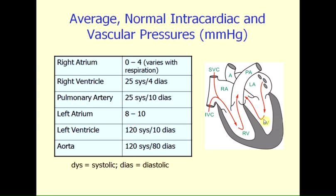The left ventricular pressure is rather high. It has a systolic pressure normally of around 120 millimeters of mercury when it contracts. In a person with hypertension or high blood pressure, it might be 140, 160, or 180 millimeters of mercury. But typically it's around 120 millimeters of mercury, and its diastolic pressure will be roughly the same as the pressure within the left atrium — so about 120 over 10 millimeters of mercury.